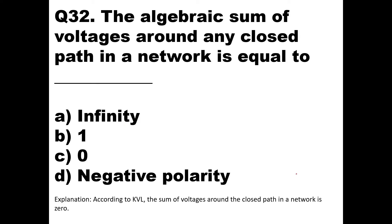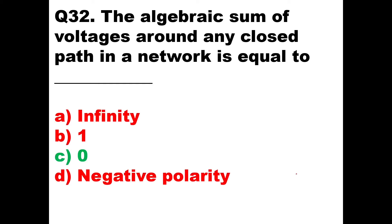Question number 32: the algebraic sum of voltages around any closed path in a network is equal to — this is according to KVL. The algebraic sum of voltages, whether voltage drop or voltage source, equals zero, because voltage sources are taken as positive and voltage drops as negative. So the sum around a closed loop is zero. Option C, zero, is the answer.